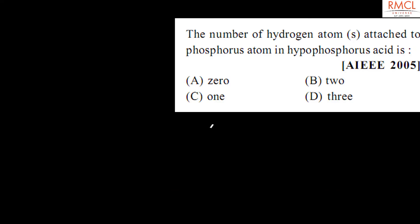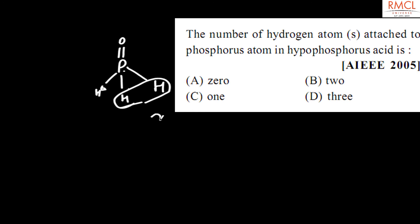The question asked in AIEEE 2005 is: the number of hydrogen atoms attached to the phosphorus atom in hypophosphorous acid. The formula of hypophosphorous acid is H3PO2. The number of hydrogen atoms directly attached to the phosphorus atom is 2. So the correct answer is option B.